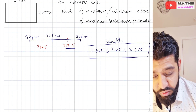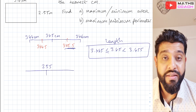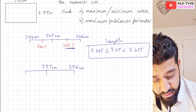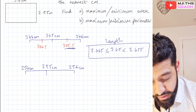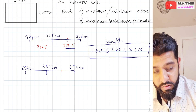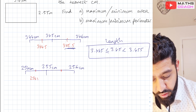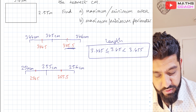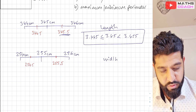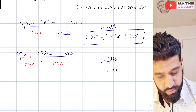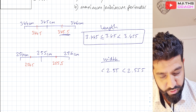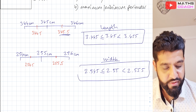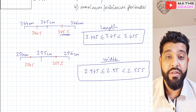For the width, we have 2.55, which becomes 255 centimetres. Drawing a number line, we have 256 centimetres and 254 centimetres. Finding the middle values: 254.5 for the lower limit and 255.5 for the upper limit. So for the width, the error interval is 2.545 ≤ 2.55 < 2.555 metres — and that is our error interval for the width.